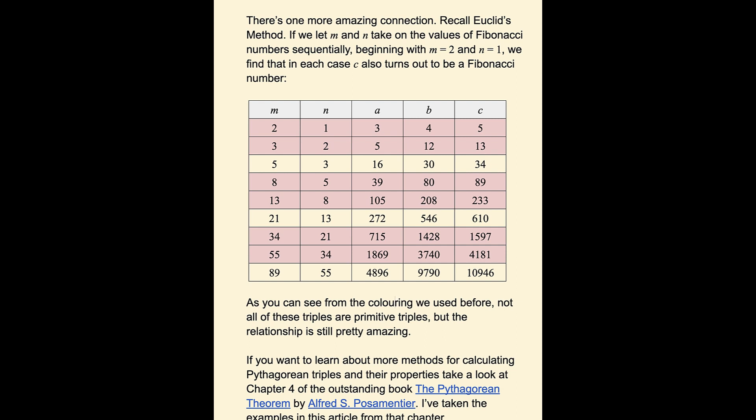And once again, we're not getting always primitive triples, but we are getting triples. So here we have 5 and 3 gives us 16, 30, 34. 8 and 5 give us 39, 80, 89. And again, an amazing and unexpected connection between Pythagorean triples and Fibonacci.